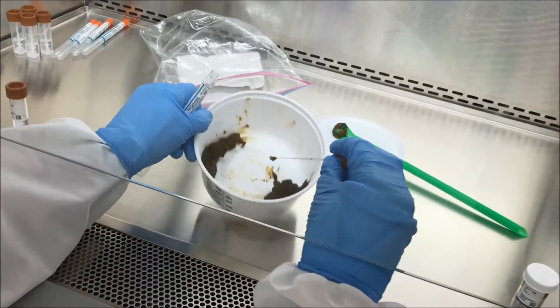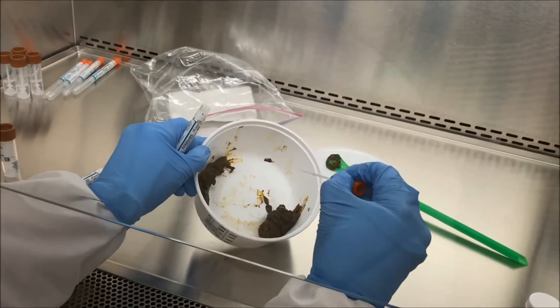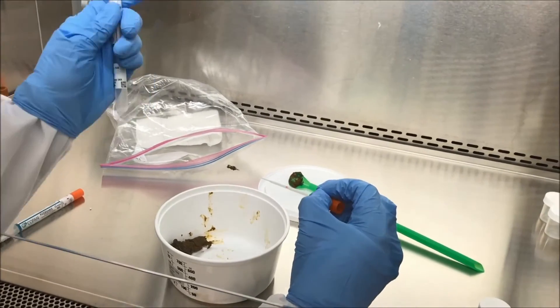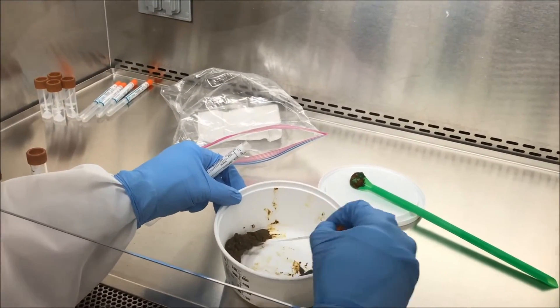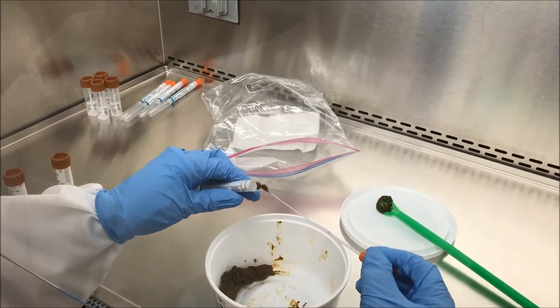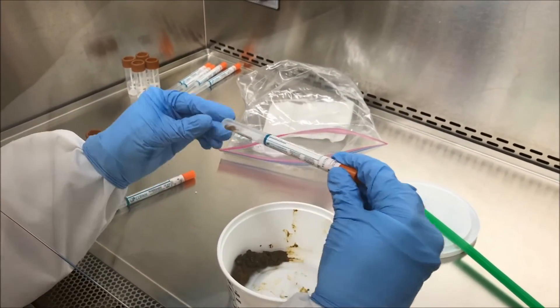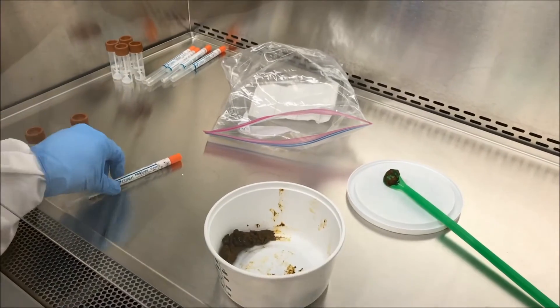If the stool is really hard, like this part of it, we try to chip off a little piece and put it into the tube, into the swab tube itself. So that when we go back to it for DNA extraction, we can just put that piece of stool into the extraction well. So there's one.